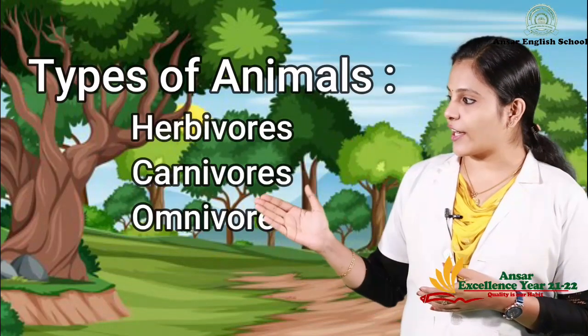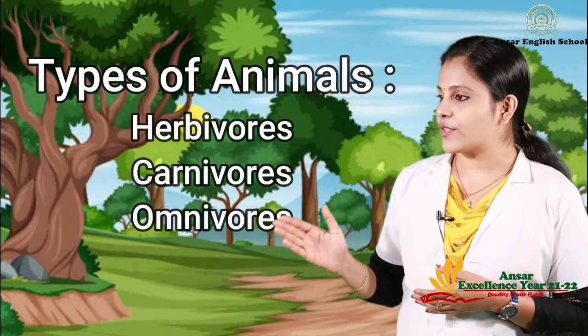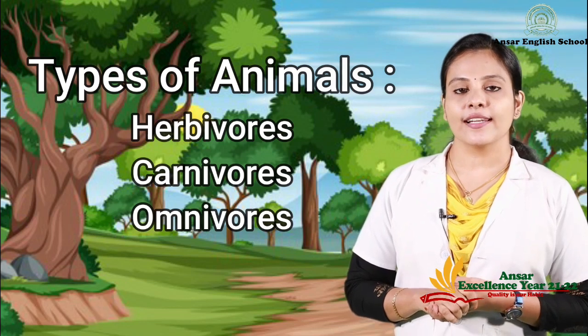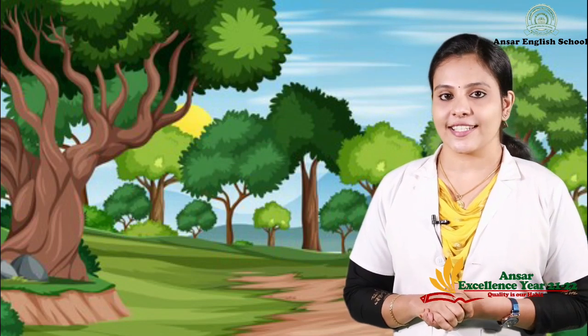Children, living organisms need food. Do all of them eat plants? No. Based on their food habits, we can classify them into three categories: herbivores, carnivores, omnivores. Now let's learn about them in detail.